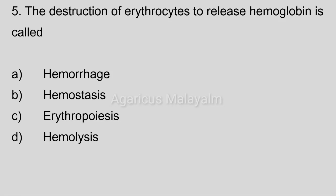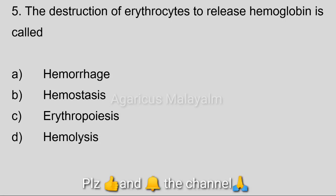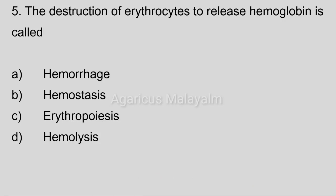Fifth question: The destruction of erythrocytes to release hemoglobin is called? Option A: hemorrhage. Option B: hemostasis. Option C: erythropoiesis. Option D: hemolysis. Correct answer: Option D, hemolysis.